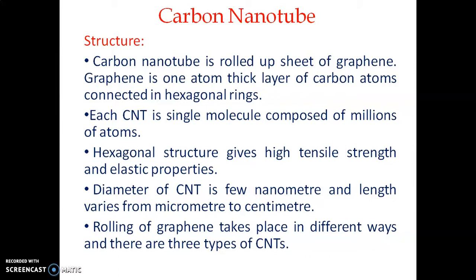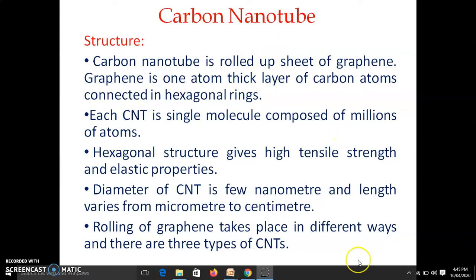A carbon nanotube is essentially a rolled-up sheet of graphene. One carbon nanotube is one molecule made up of millions of carbon atoms. These atoms are interconnected into hexagons and connected by covalent bonds. Because one nanotube is a single molecule, it is very strong and has a very high tensile strength. Based on the direction of rolling, we can have different orientations of the carbon nanotube.